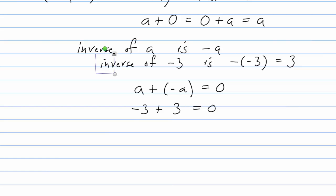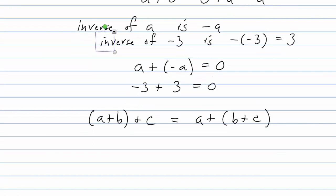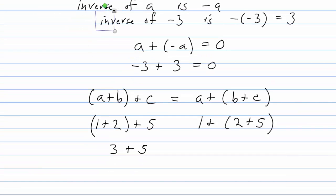Finally, the operation of addition on the integers is associative: (a plus b) plus c equals a plus (b plus c). As a quick example, consider (1 plus 2) plus 5 versus 1 plus (2 plus 5). On the left, 1 plus 2 is 3, and 3 plus 5 is 8. On the right, 2 plus 5 is 7, and 1 plus 7 is also 8. This holds for any three numbers.